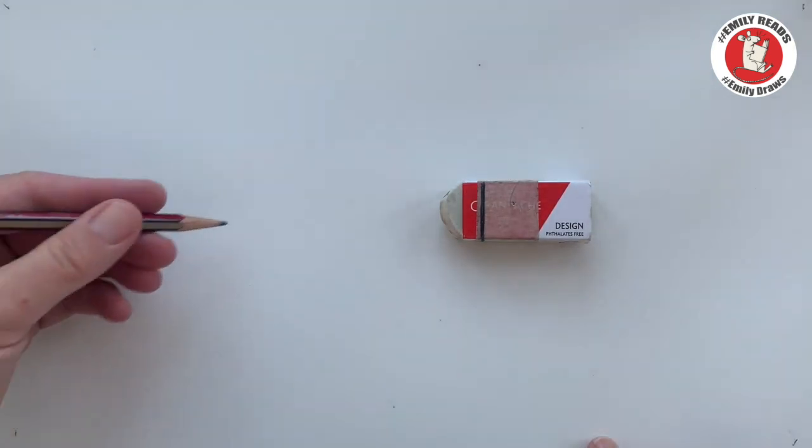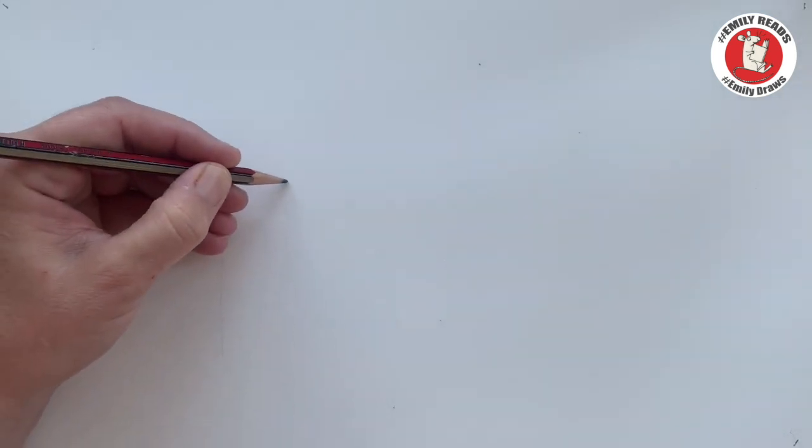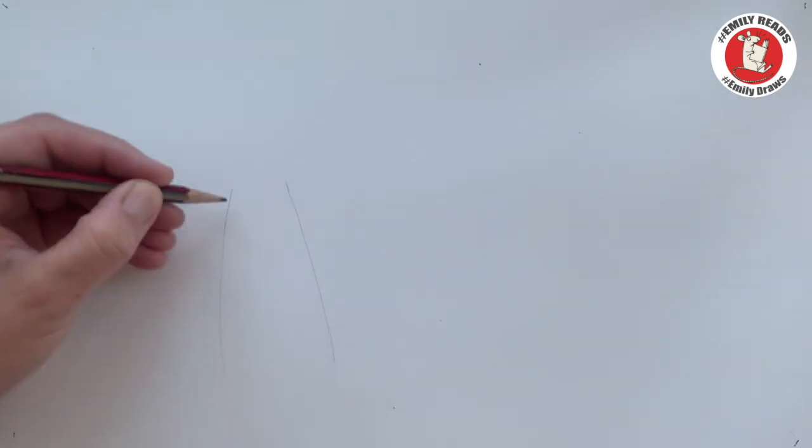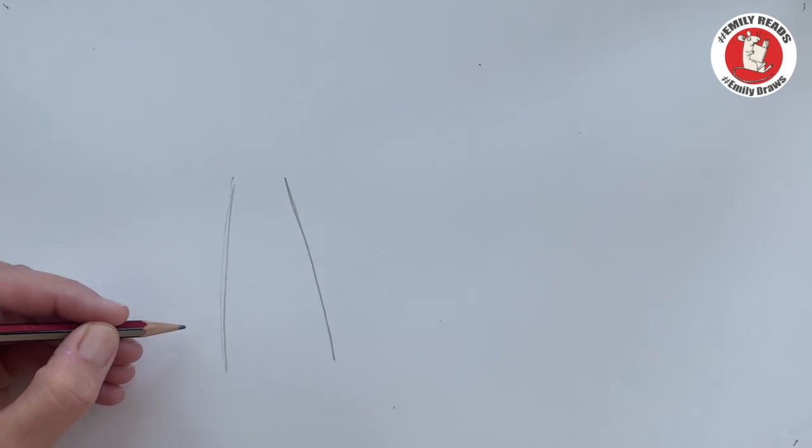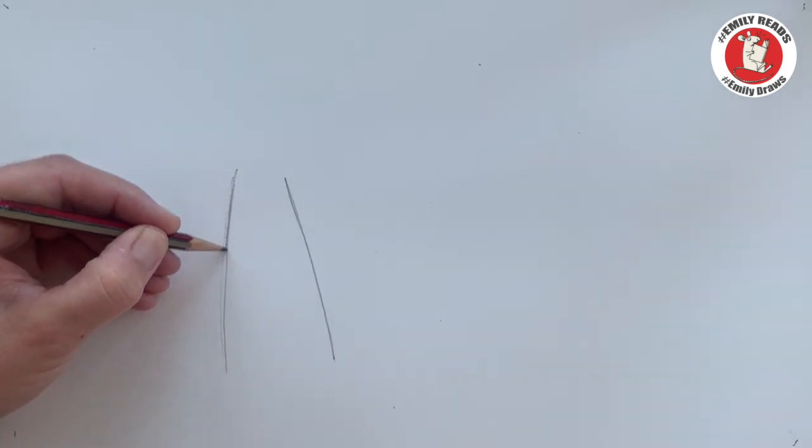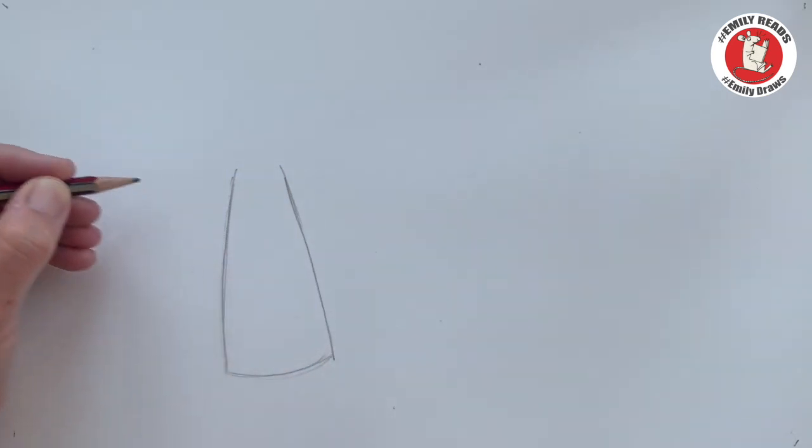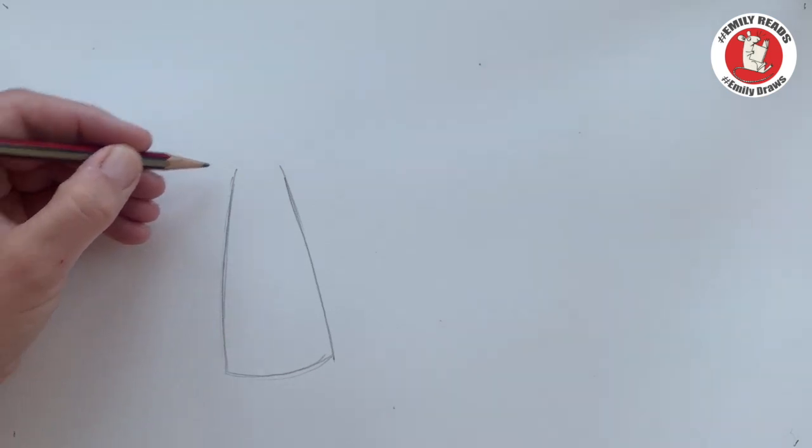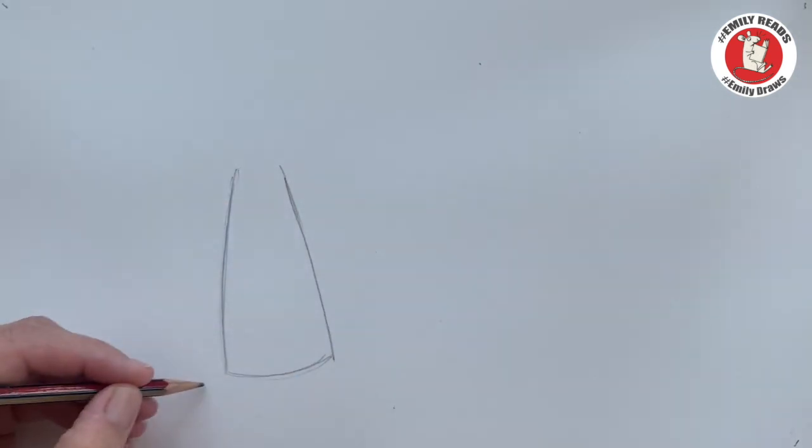So I think we are going to draw our mouse here. So the very first thing we're going to do, let's move the rubber out of the way, is I'm going to draw a sort of oblong, which is almost a triangle, goes in towards the top. Can everybody see that? And slightly curved towards the bottom.